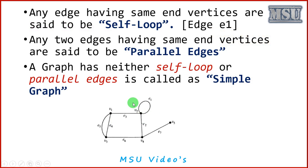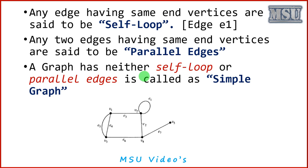If a graph does not have any self-loop or parallel edges, we call it a simple graph. A normal graph can contain any number of edges and any kind of edges. But if we restrict ourselves so that the graph has no self-loop or parallel edges, it is called a simple graph. This example is not a simple graph — it is a normal graph.